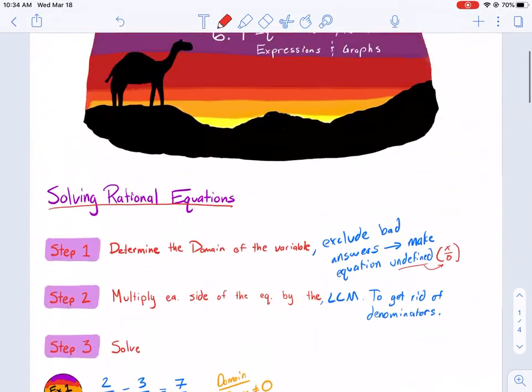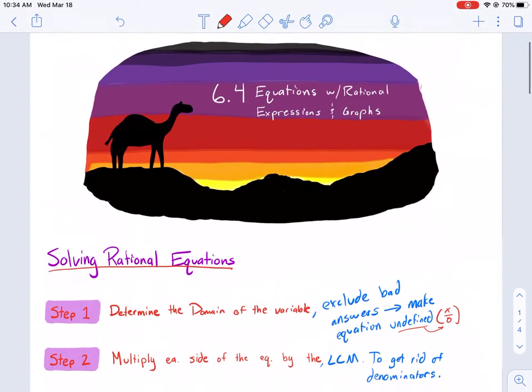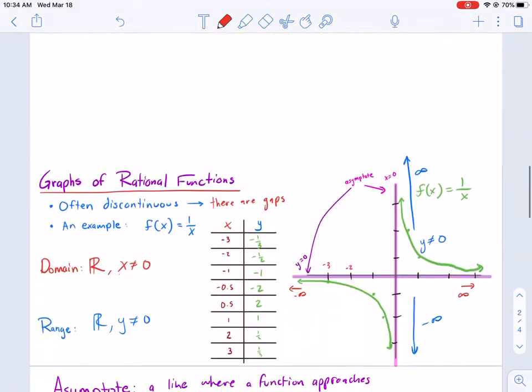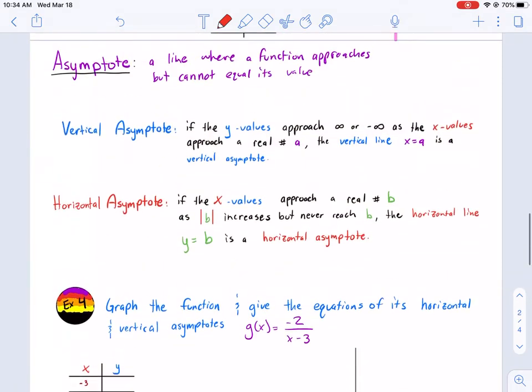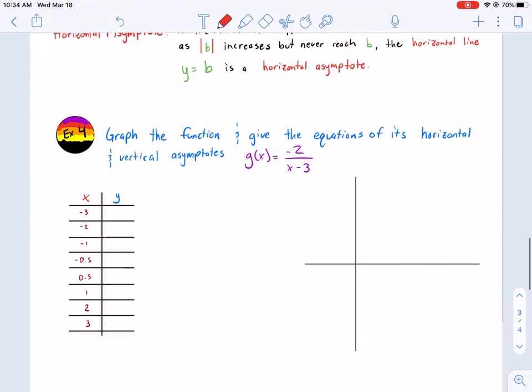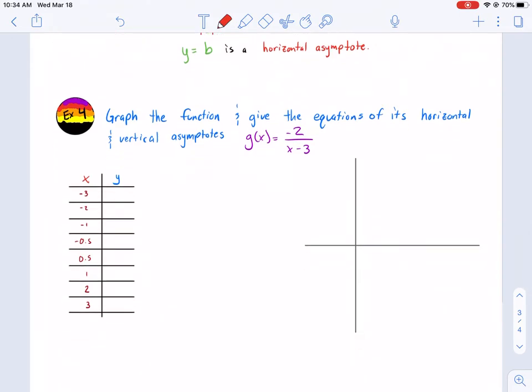Welcome back to graphing rational functions. In this last section, we're going to do another example where we have to graph a new function. This particular function g of x equals negative 2 over x minus 3.